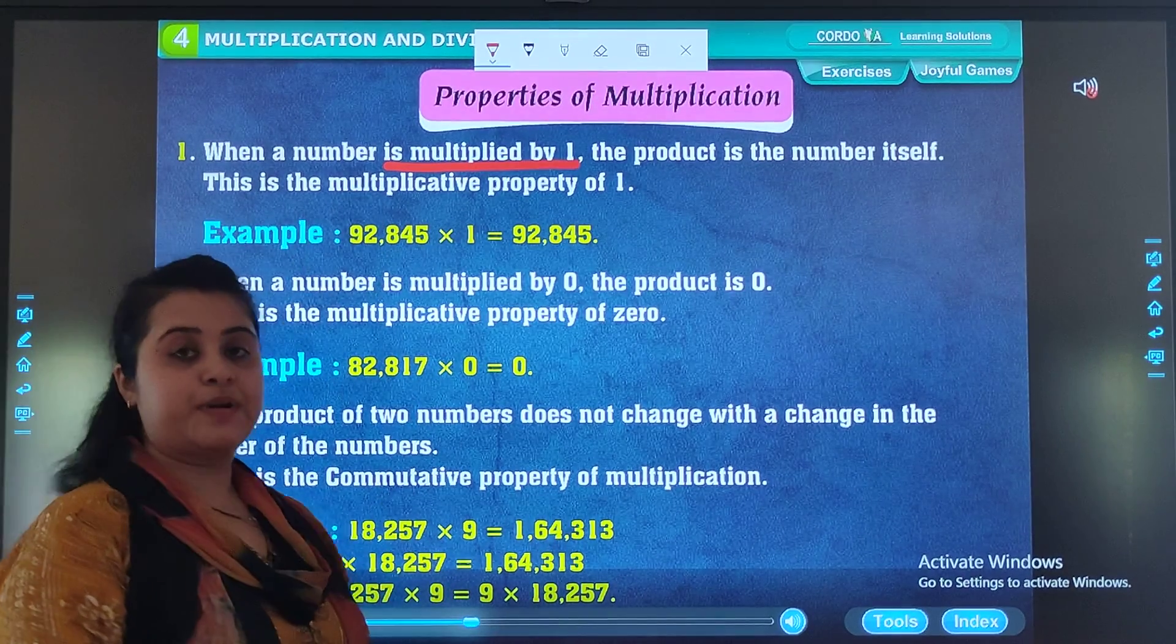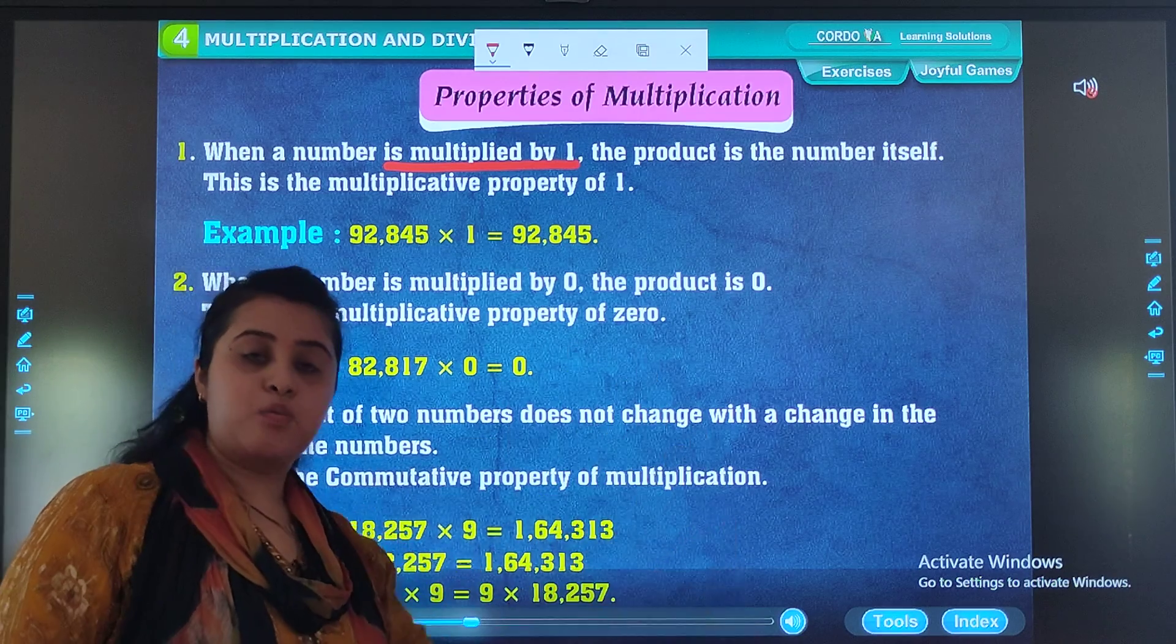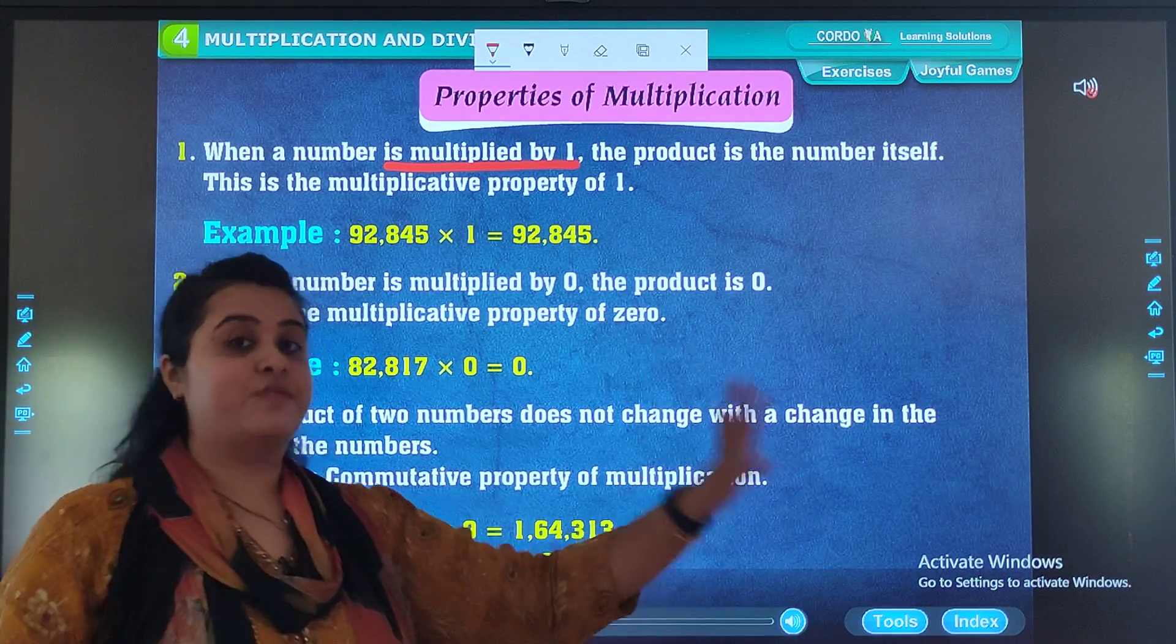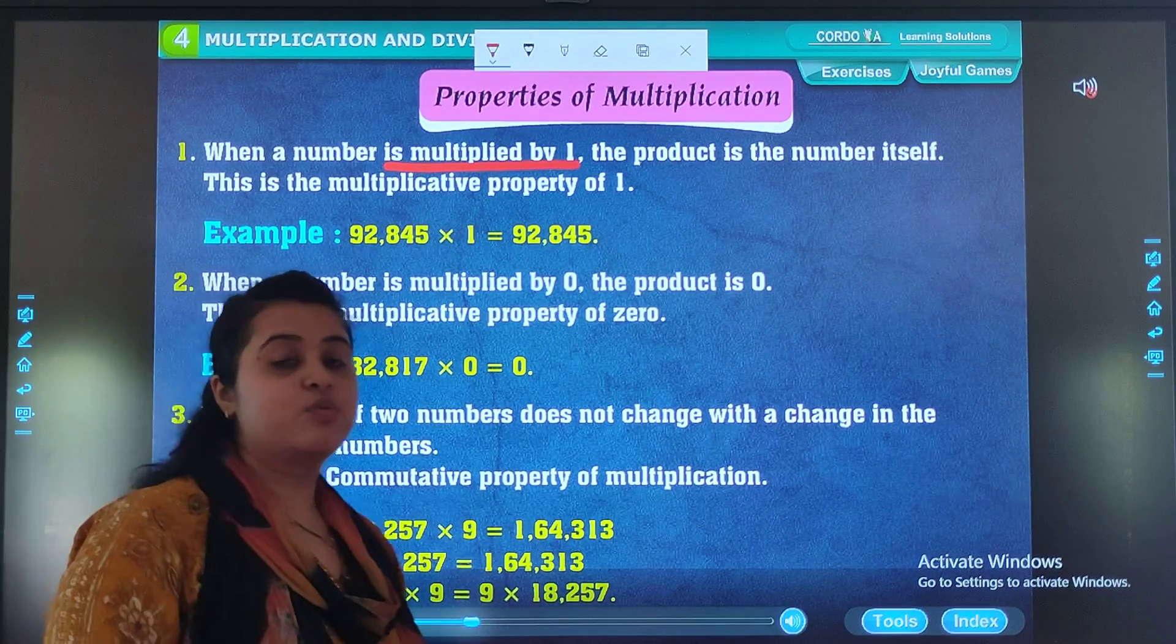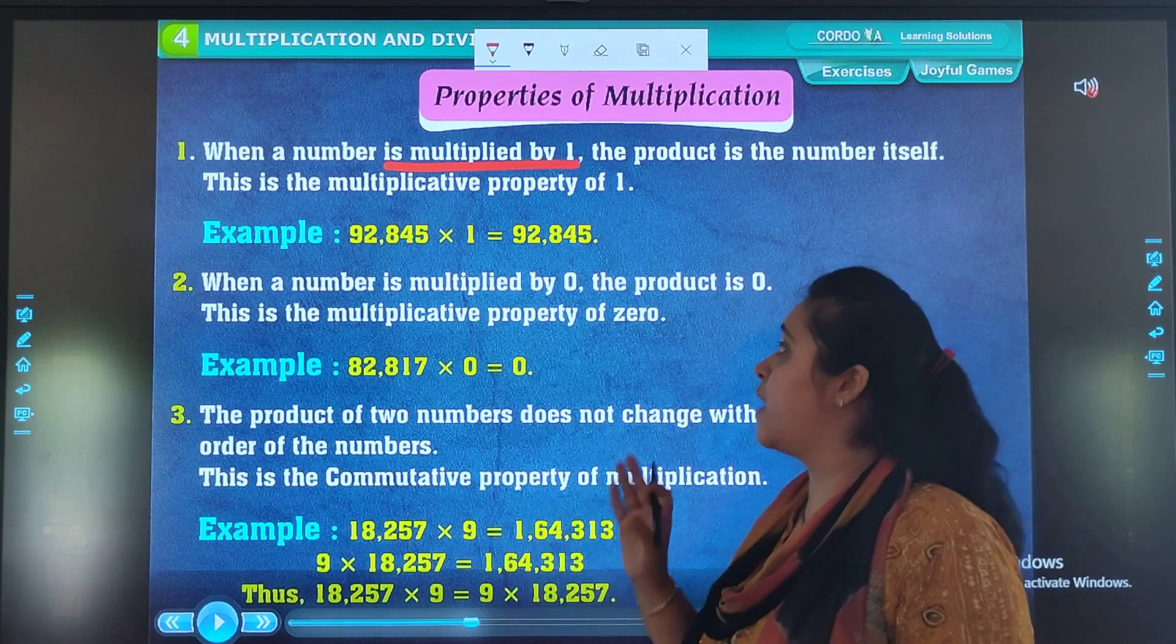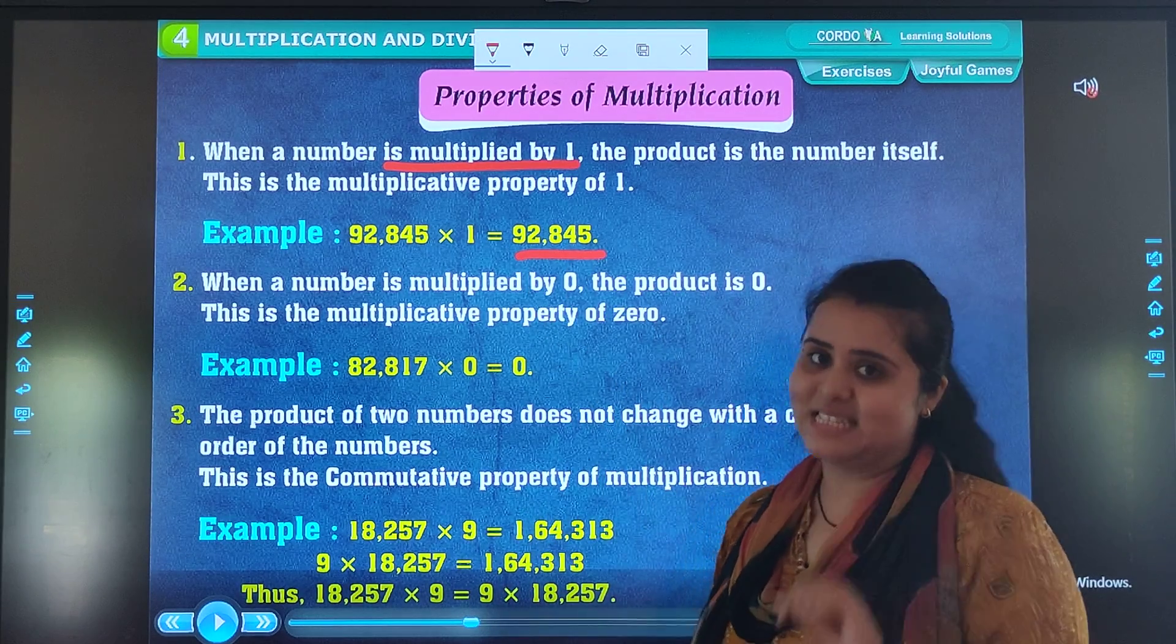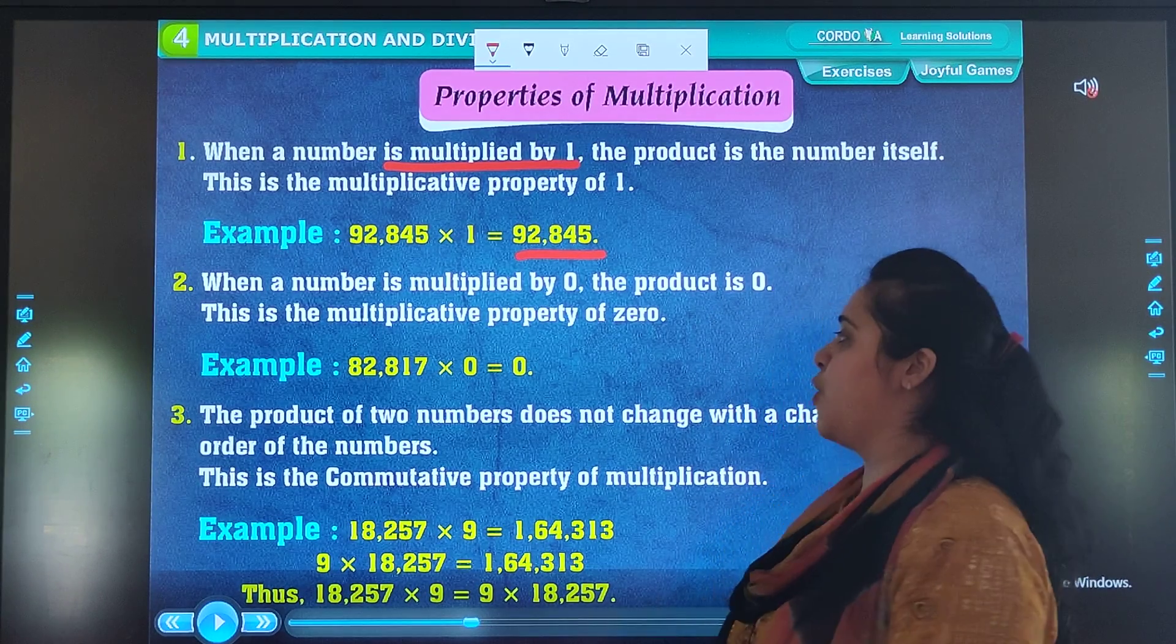What this property says? That if a number is multiplied by 1, the answer will be the number itself, same. As you can see here in the example, 92,845 is multiplied by 1. The answer is same itself. So let's move to the second part.